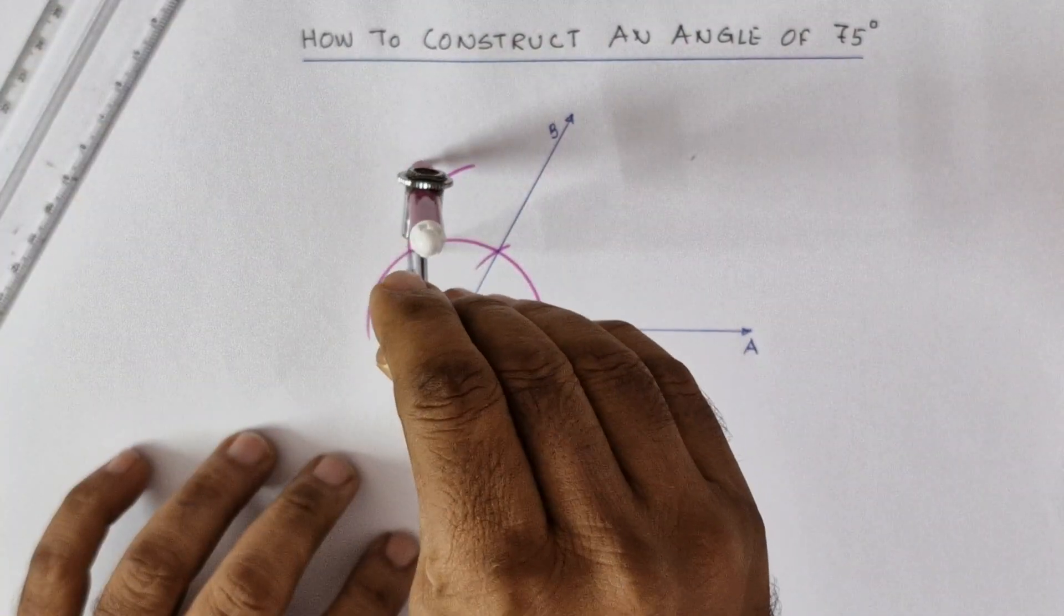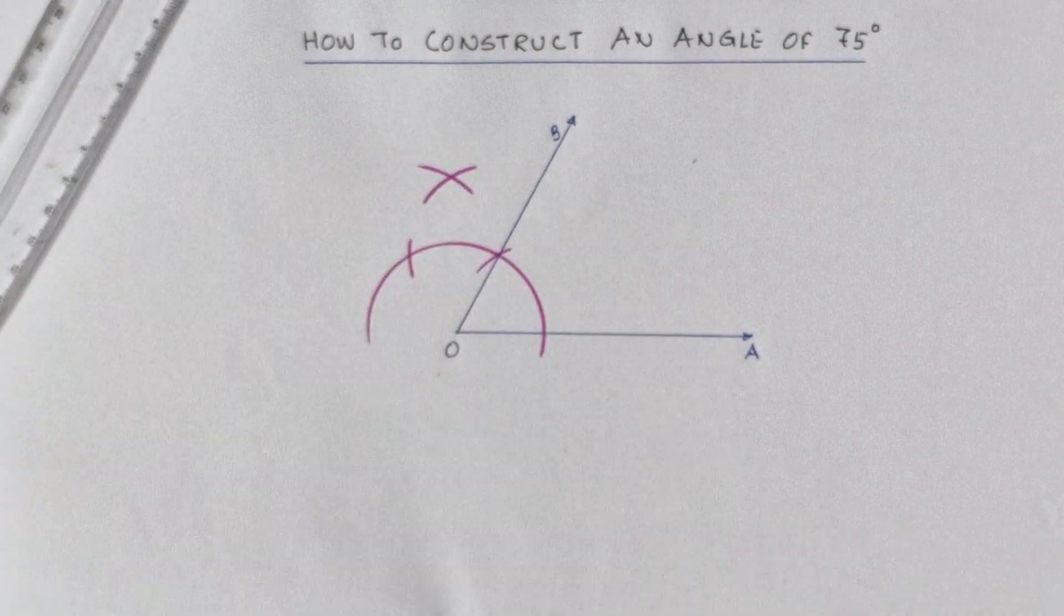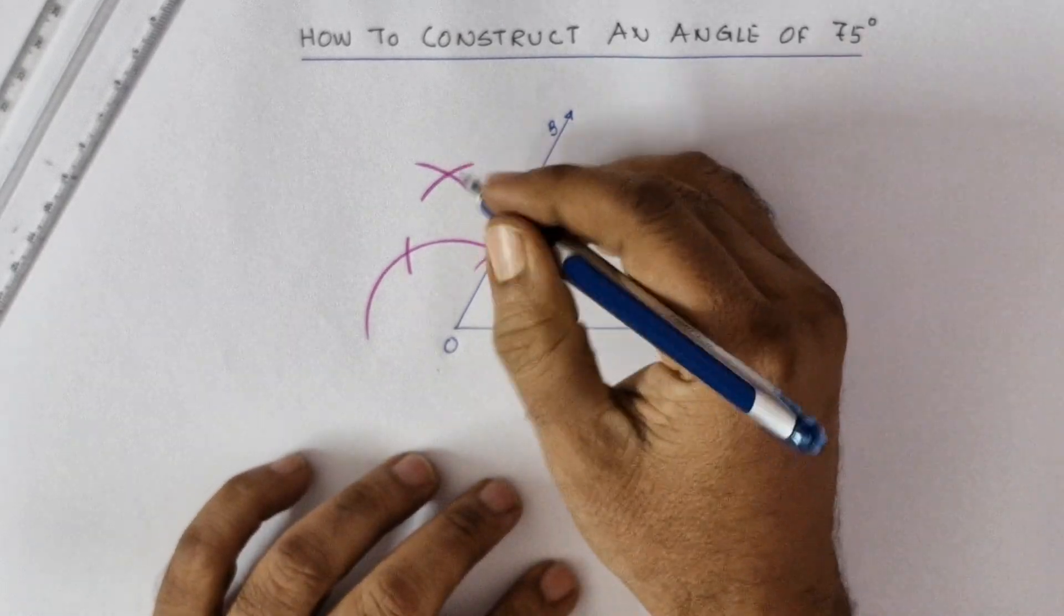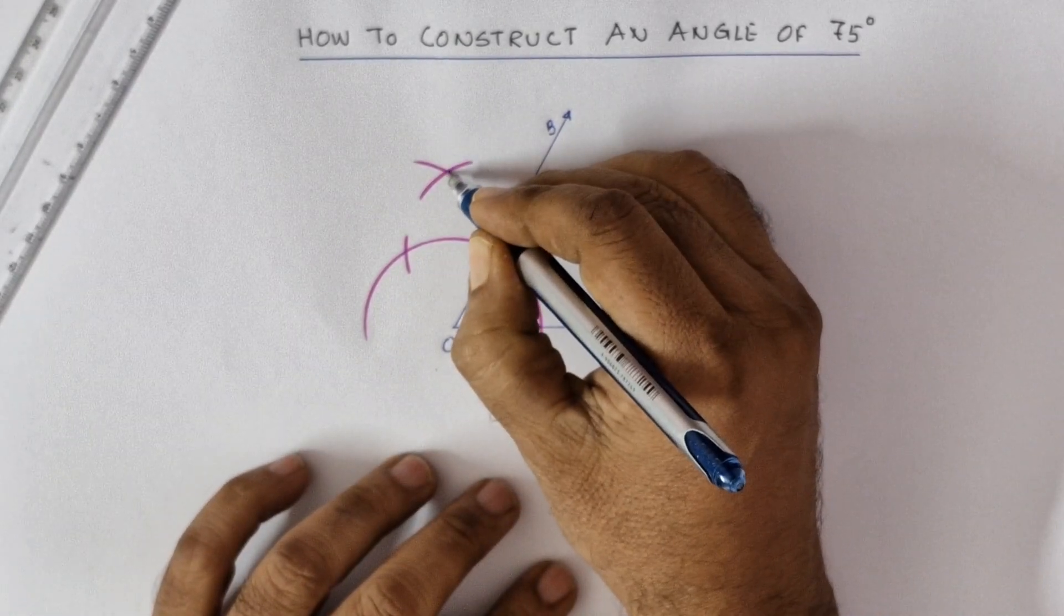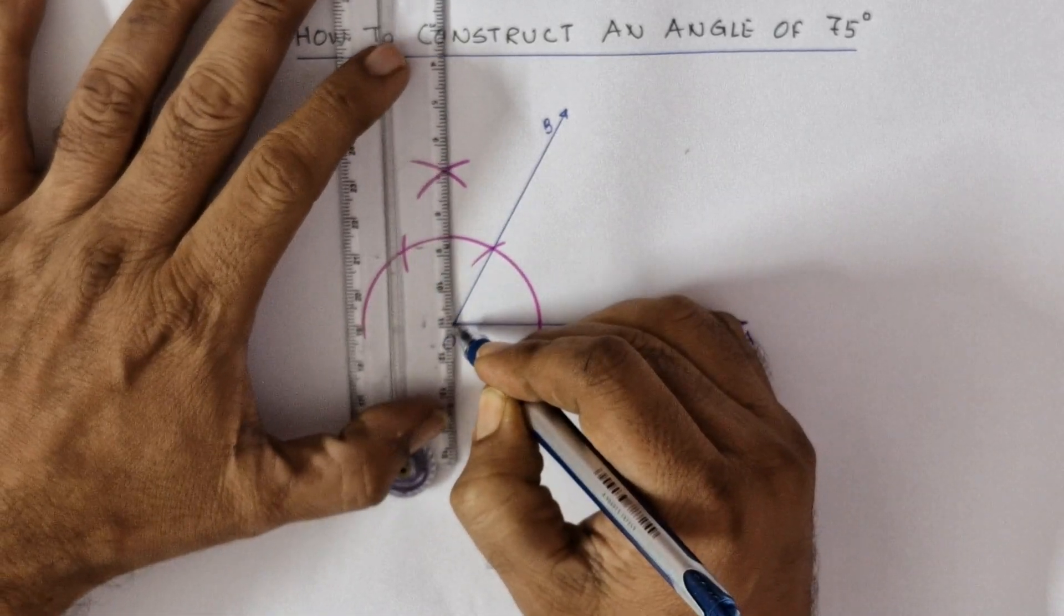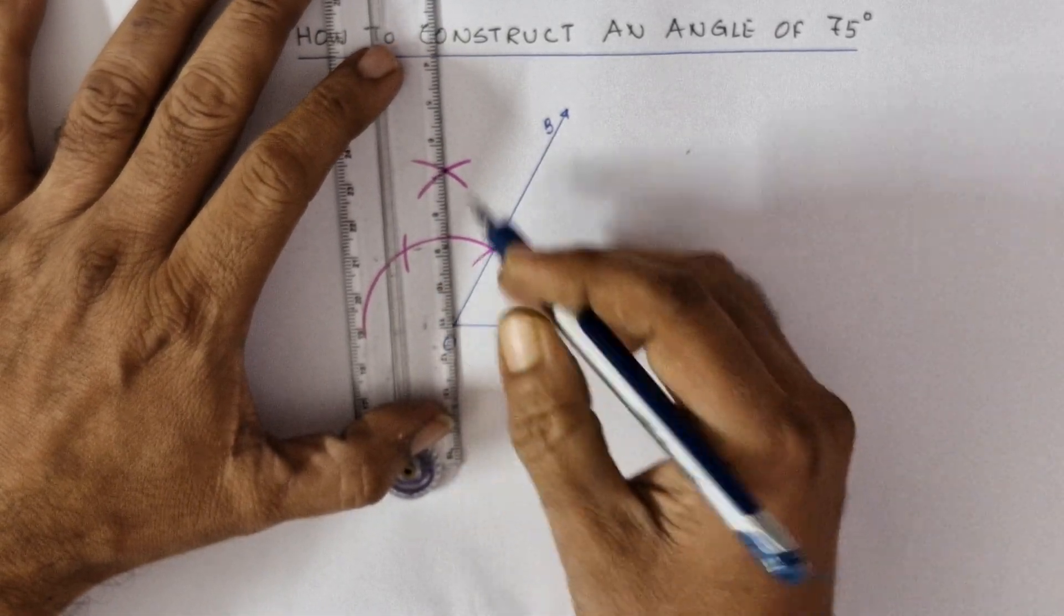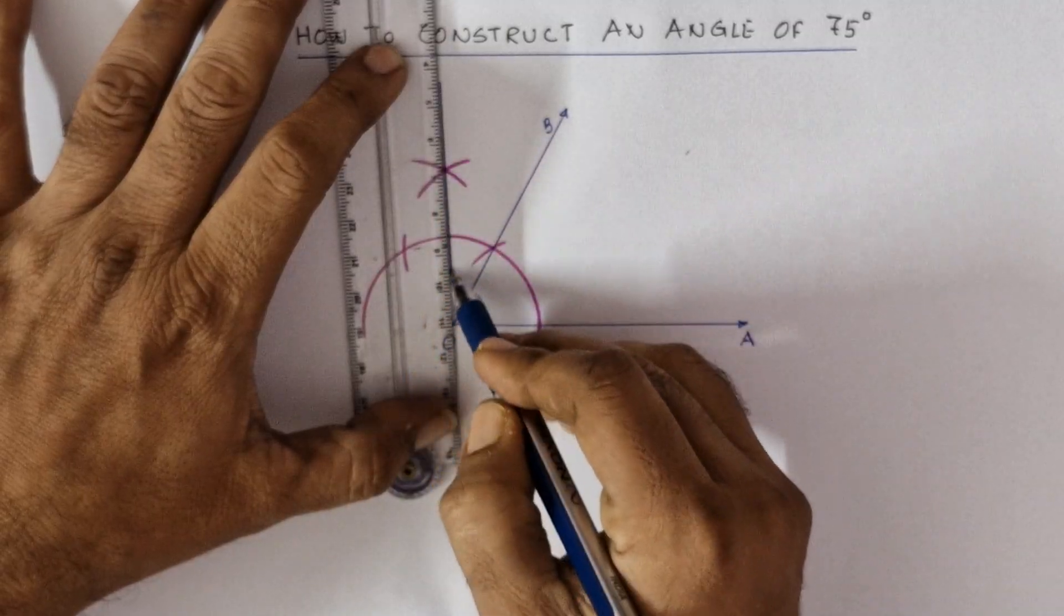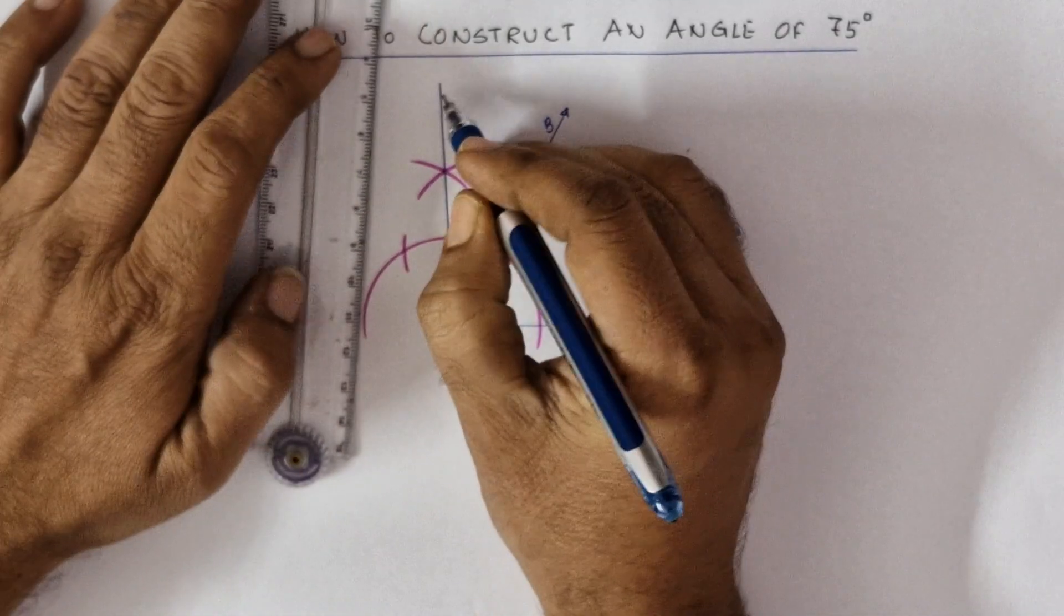Now point the intersection point properly and join O and this point. What will you have? You will have a 90 degree angle.